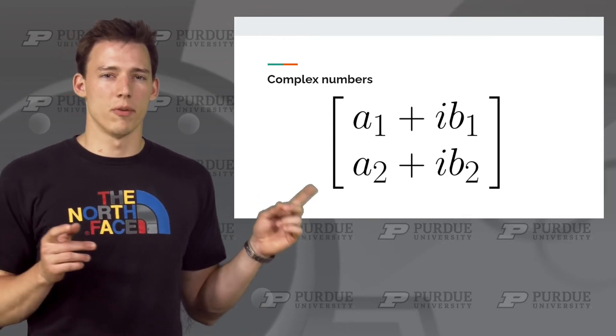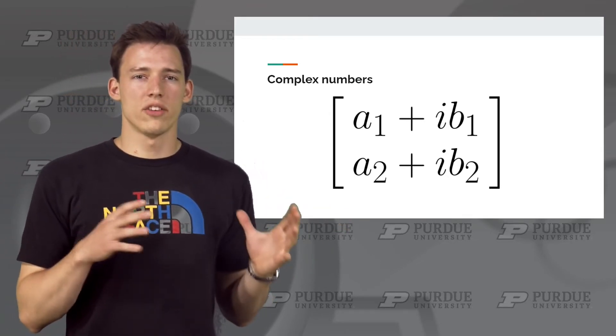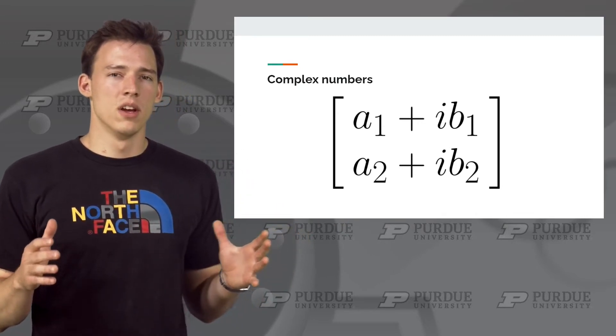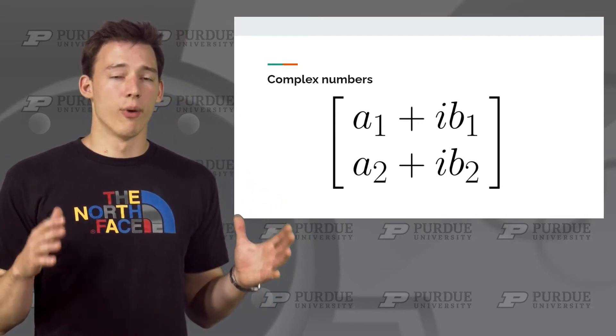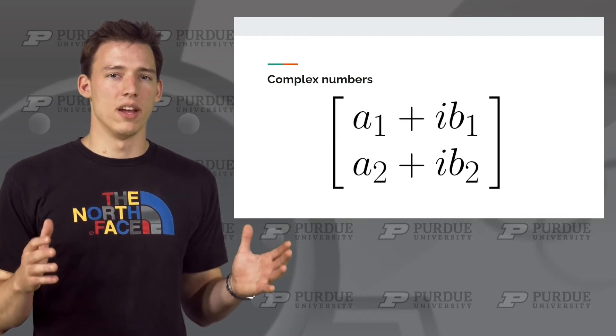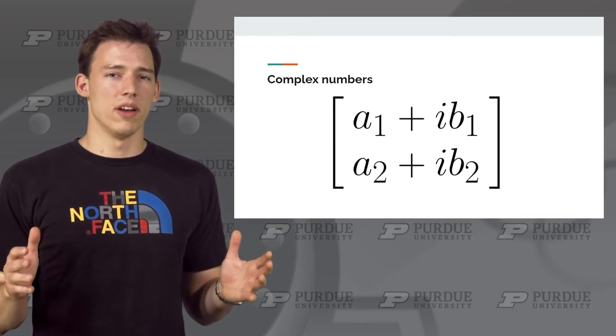This vector right here is a description of a possible qubit state. So long as the square of these entries is 1, this is a valid state. So in this state, we actually have 4 degrees of freedom, which are needed to describe the state. A1, B1, A2, and B2 can all be varied.